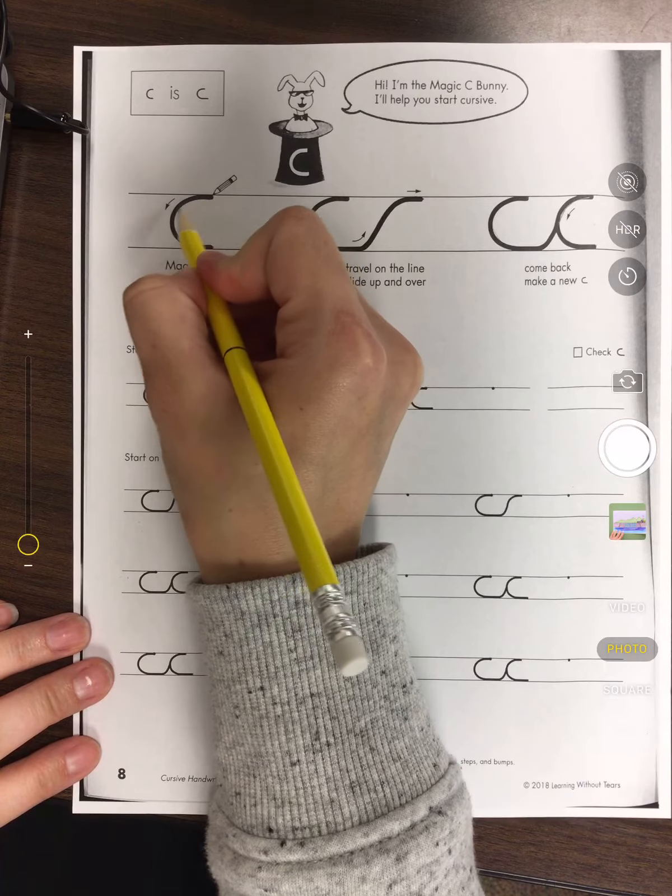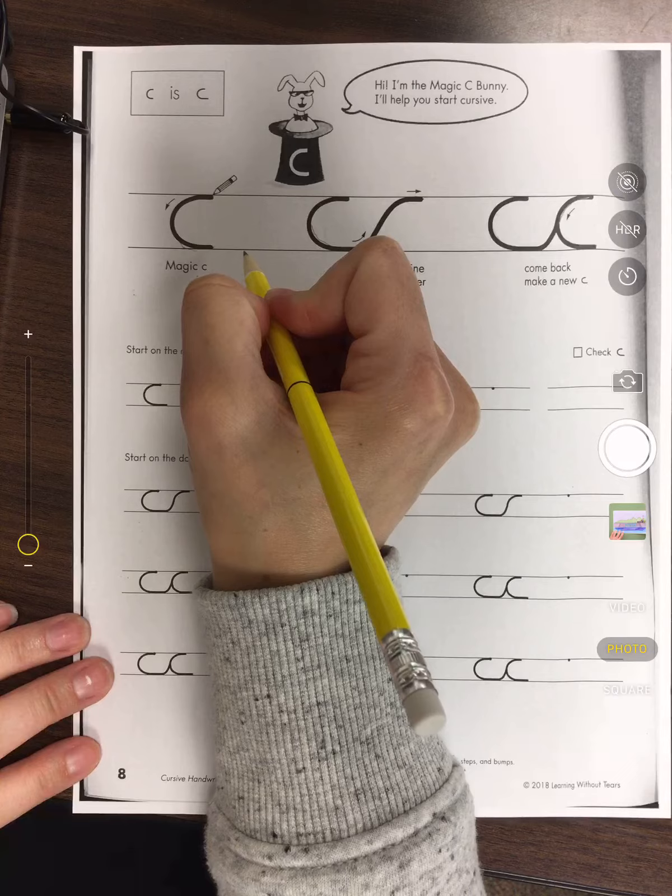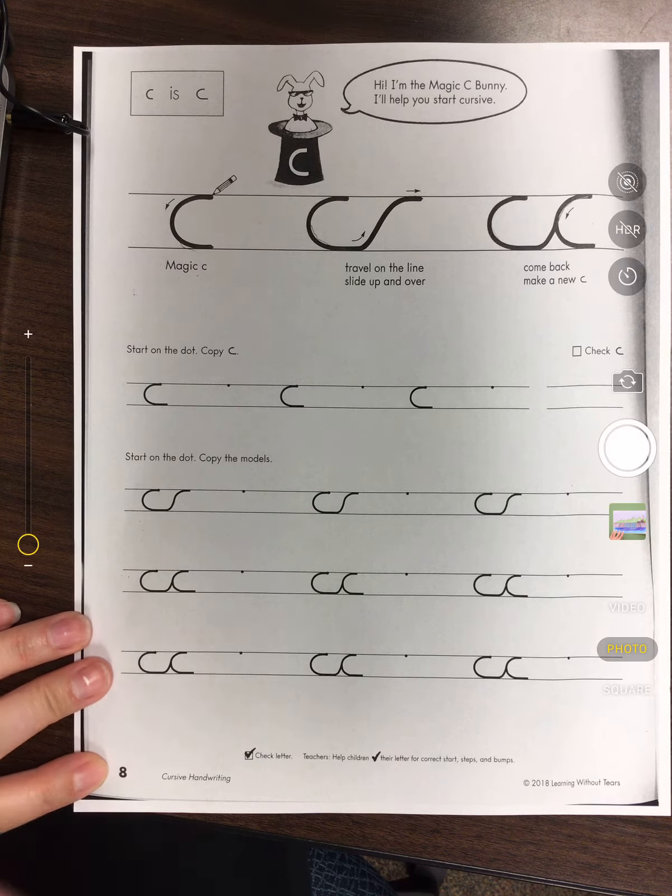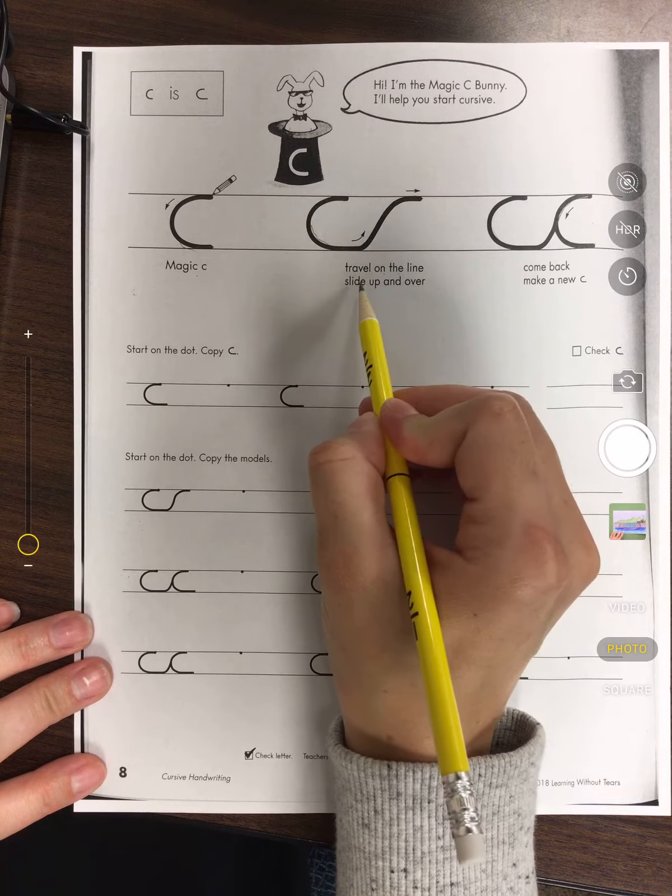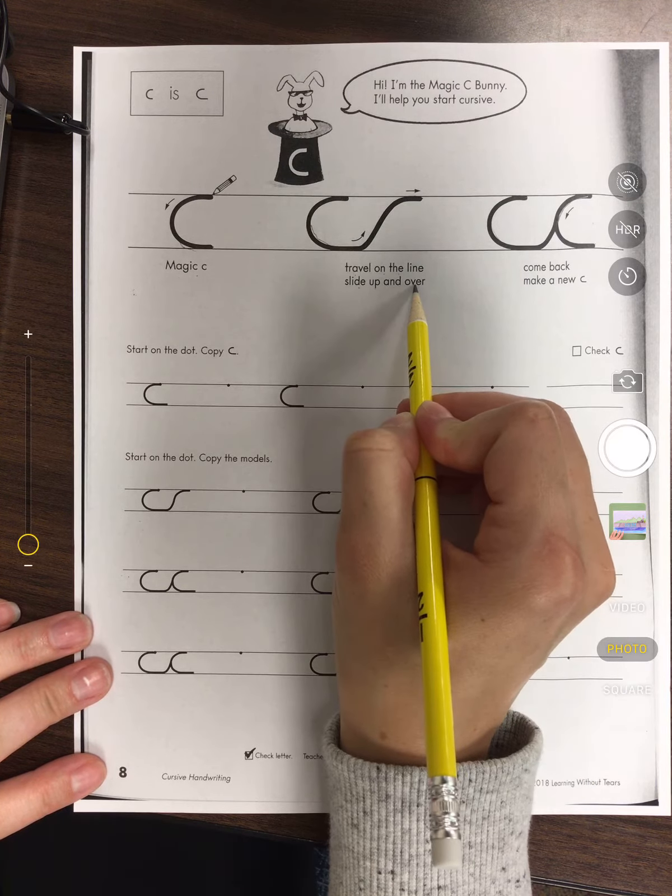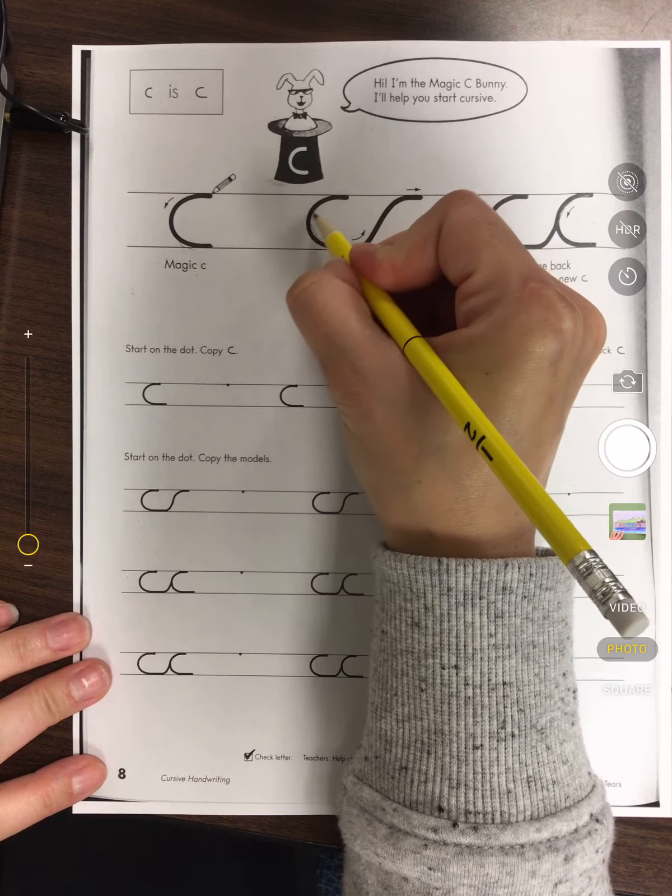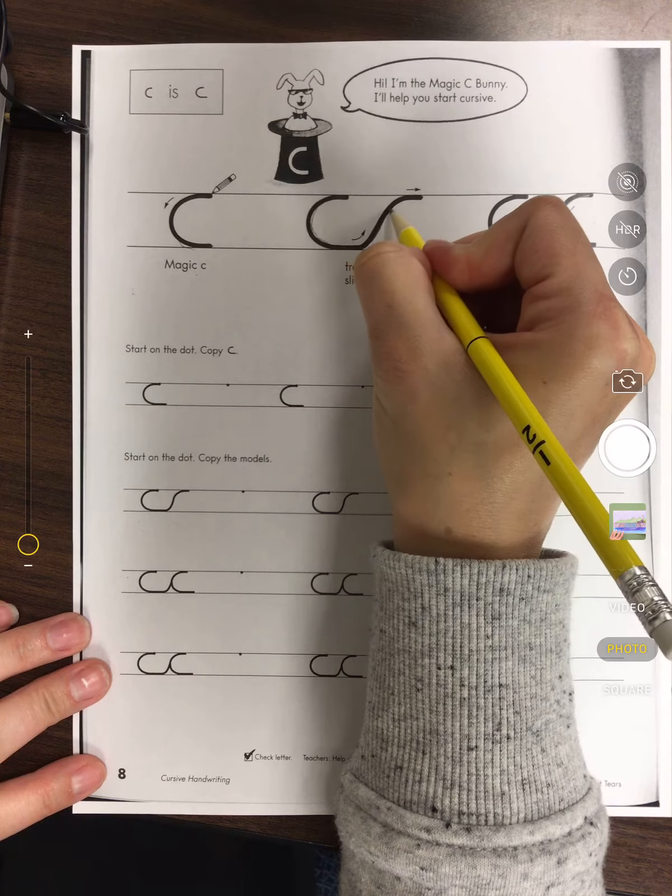We start and we come down. This says travel on the line, slide up and over. So for this C it's saying to travel along the dark line and you go up and over.